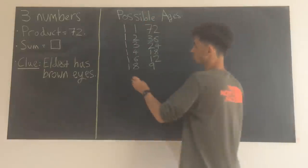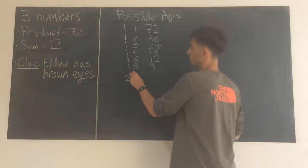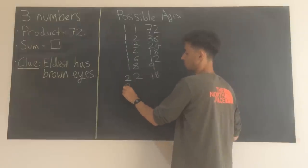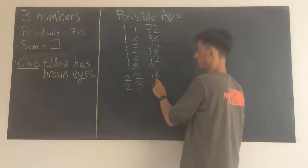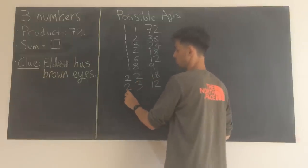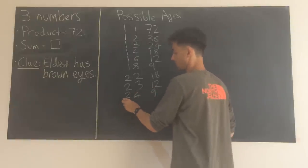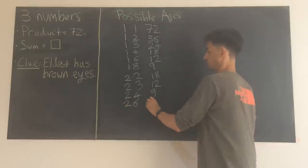So we could have 2, 2 and 18, 2, 3 to give 6, 12, 2, 4 to give 8, 9. We could have 2, 6 to give 12, and we need another 6.